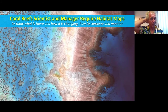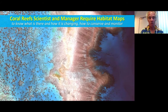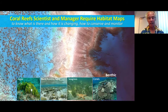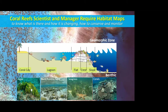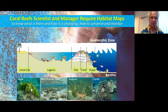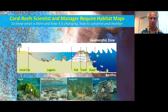Habitat maps are used by scientists and managers. They represent in our case the benthic environment — the algae, rubble, sand, seagrass, and corals — or the different geomorphic zones. You can see on the satellite image the different zones and the different compositions of each of those zones.